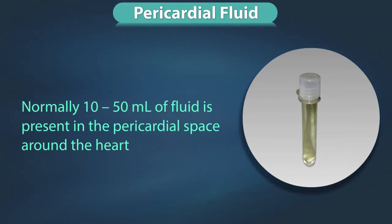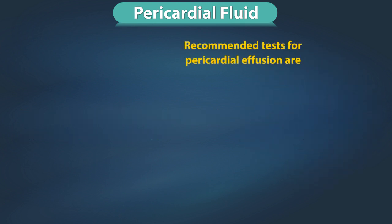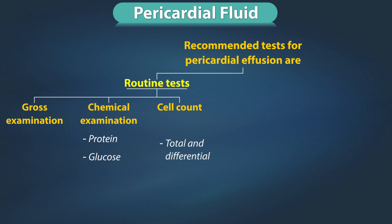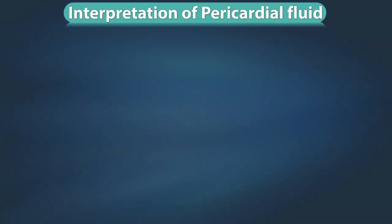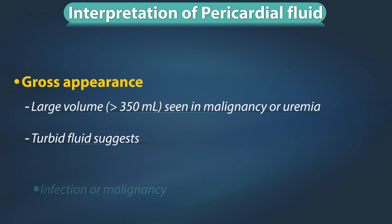Pericardial fluid: normally 10 to 50 ml of fluid is present in the pericardial space around the heart. The process of fluid formation is the same as described earlier. Recommended tests for pericardial effusion include routine tests: gross examination, chemical examination for protein and glucose, cell count including total and differential count, cytology, culture and gram stain. Additional tests include enzymes like adenosine deaminase for tubercular pericarditis, and lipids to differentiate chylous and pseudochylous effusions. Large volume of more than 350 ml is seen in malignancy or uremia; turbid fluid suggests infection or malignancy.